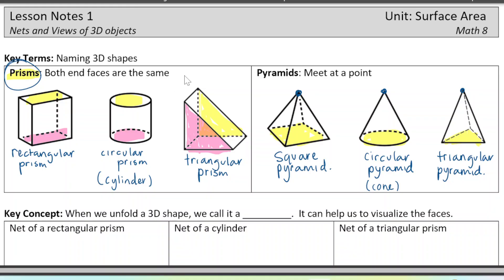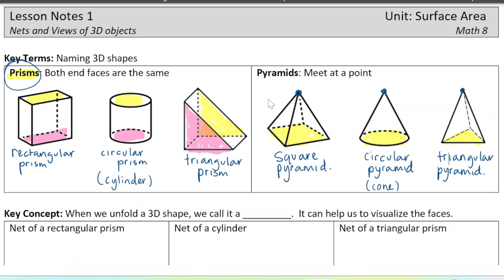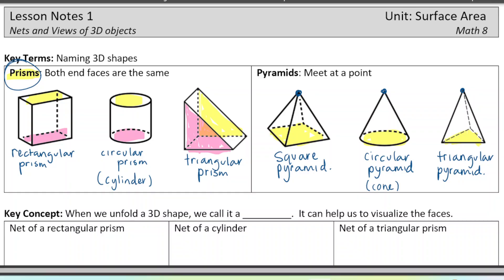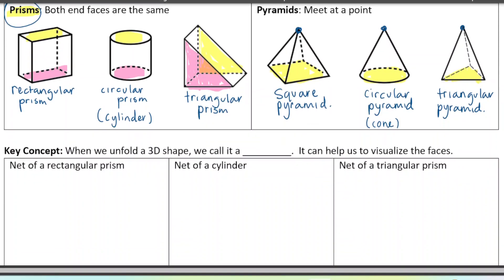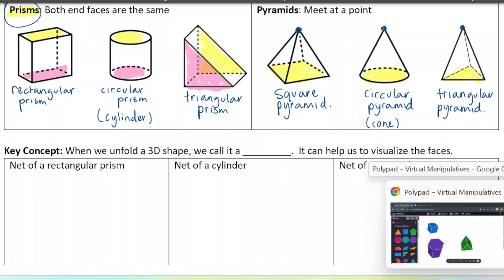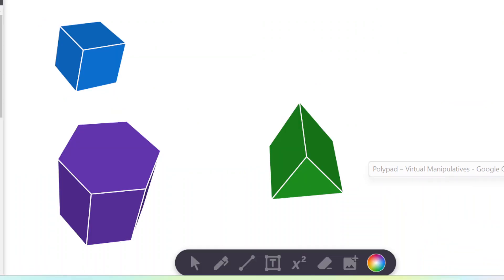Okay. So to visualize these shapes, one really useful thing to be able to do is sort of unfold this shape. So imagine having like a cardboard box and then taking that box apart and folding it flat on the ground. I'm going to show you some animations of what that might look like. And then we're going to draw our own net. So this is called creating a net. And see, I have here some prisms that I'm going to unfold.